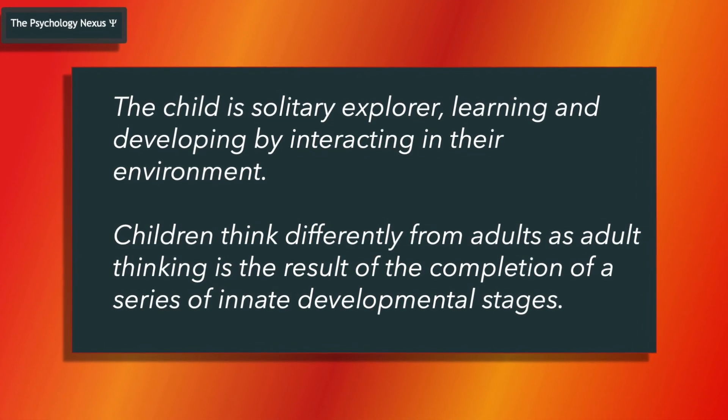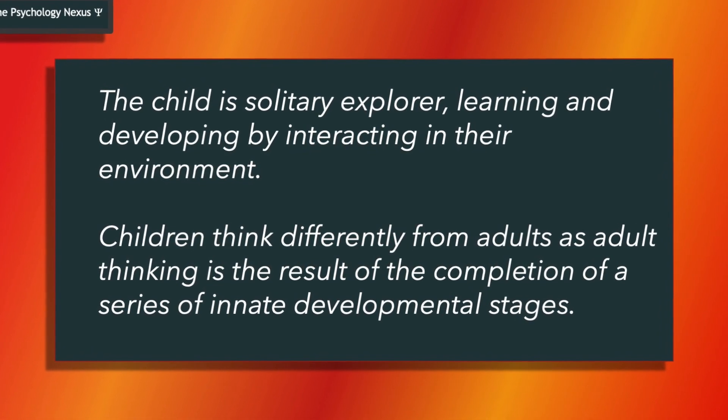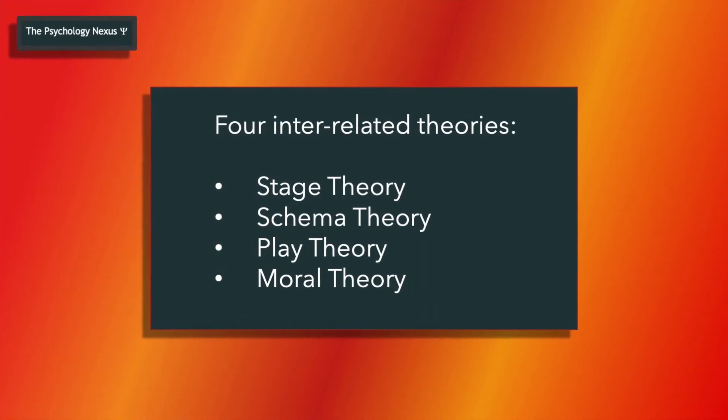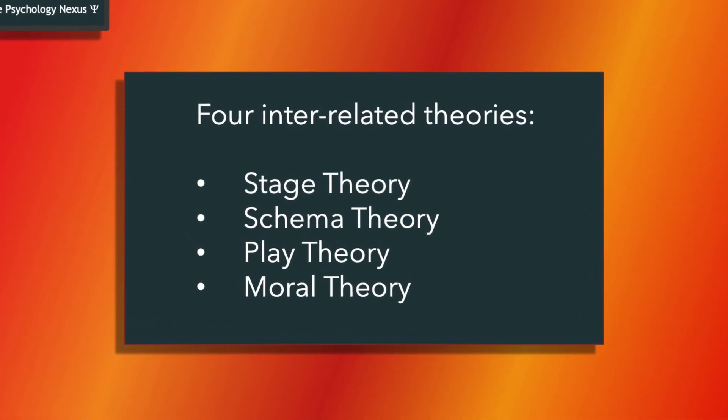He showed how children think differently from adults, arguing that adult thinking is a result of the completion of a series of innate developmental stages. All children go through the same stages, although not at the same rate. Piaget was able to demonstrate that development occurs through the interaction of innate capacities and their environment. Piaget developed four interrelated theories: stage theory, schema theory, play theory and moral theory.